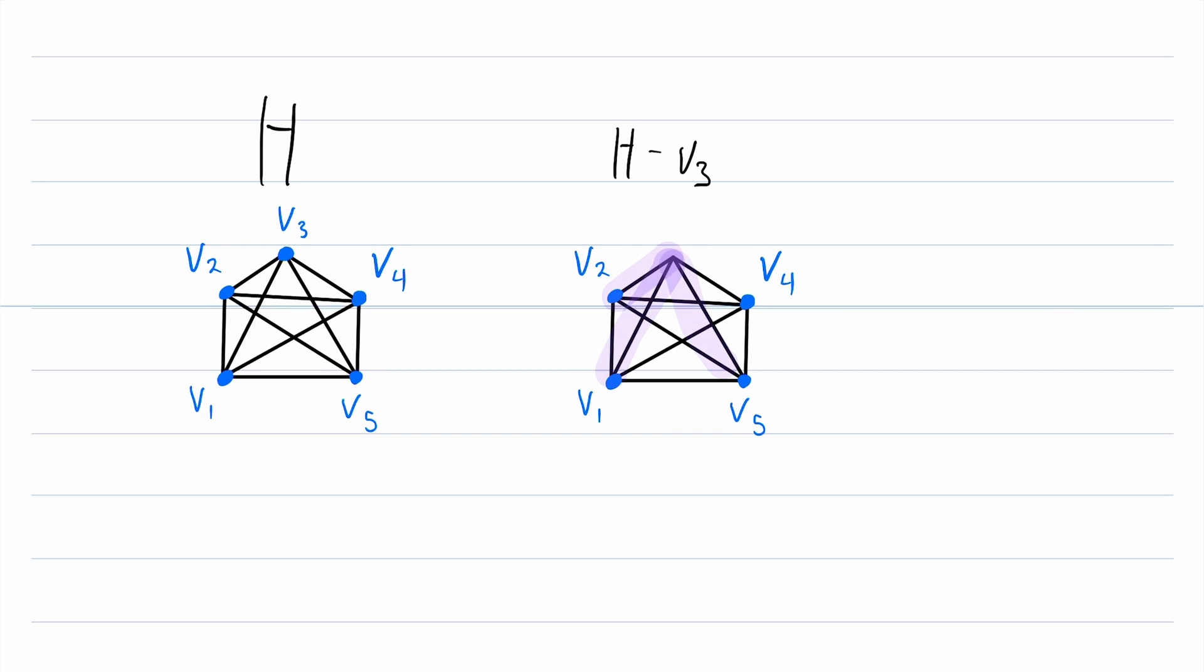But again, we can no longer have these edges in the graph because they were incident to a vertex that we no longer have. So we also have to delete all of those edges that were incident to the vertex V3. So when we subtract a vertex, we first have to delete that vertex and then we delete the incident edges. In this case, what we're left with is a complete graph on four vertices, which is pretty cool.